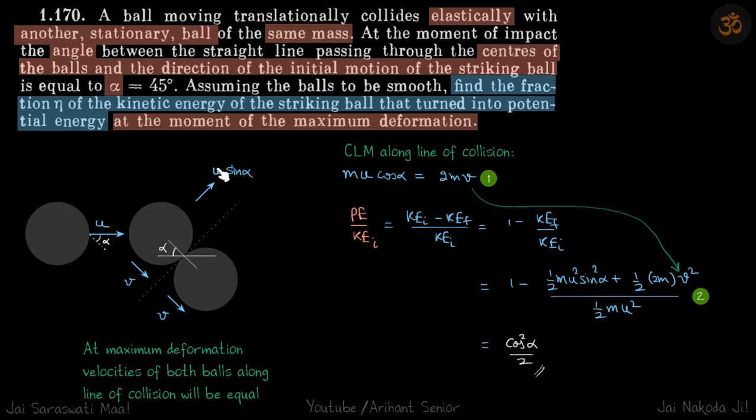Now this ratio which we need is PE upon KE initial. This PE stored we can write as KE initial minus KE final, which is 1 minus KE final by KE initial.